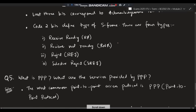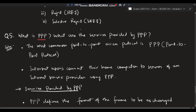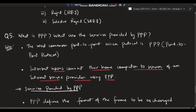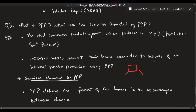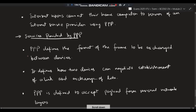Moving on to the fifth super important question: what is PPP and what are the services provided by PPP? PPP is the most common Point-to-Point Protocol. If there is a connection between two points, that is point-to-point protocol. Internet users connect their home computers to a server of an Internet Service Provider using PPP. PPP is used to connect home computers to the internet server.